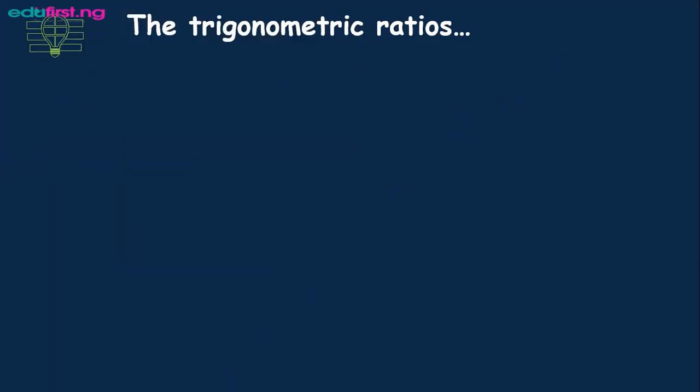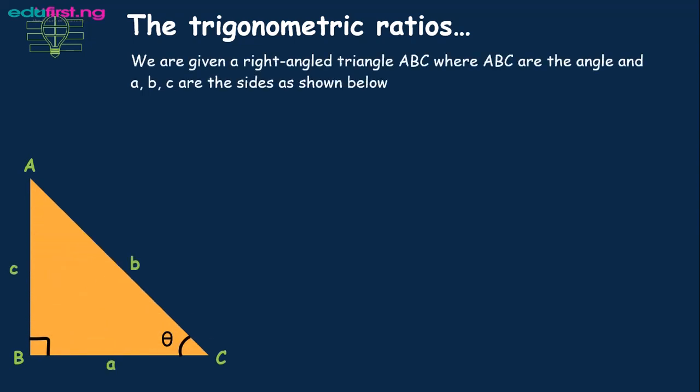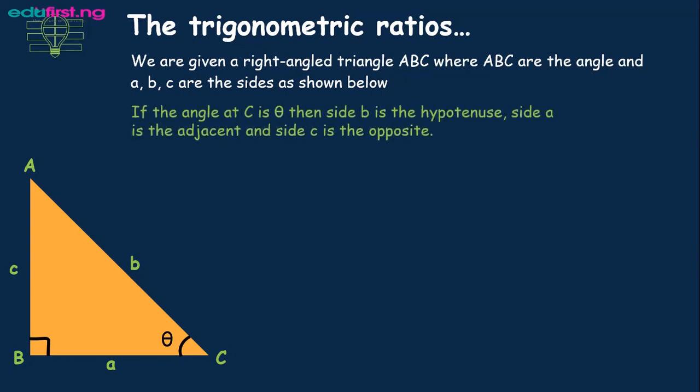How do we actually work out the trig ratios? They are gotten from the right angle triangle. We are given a right angle triangle with sides ABC, where capital letters ABC are the angles of the triangle and small letters abc are the sides. If the angle at C is theta, then side b is the hypotenuse, side a is the adjacent, and side c is the opposite. There is a mnemonic trick we usually use to remember the trig ratios — it is called SOHCAHTOA.